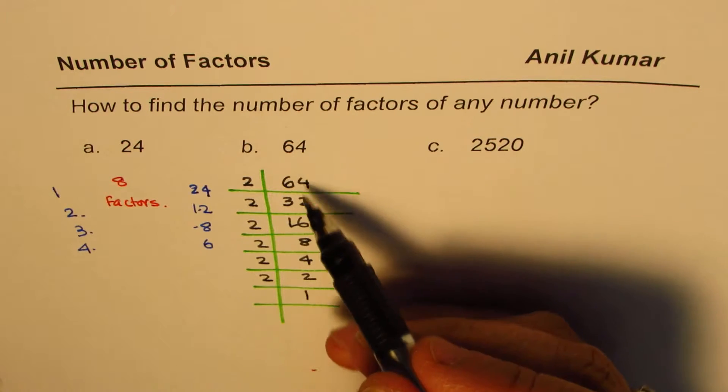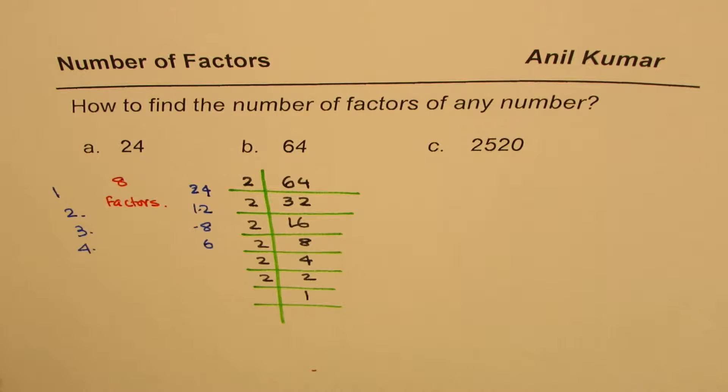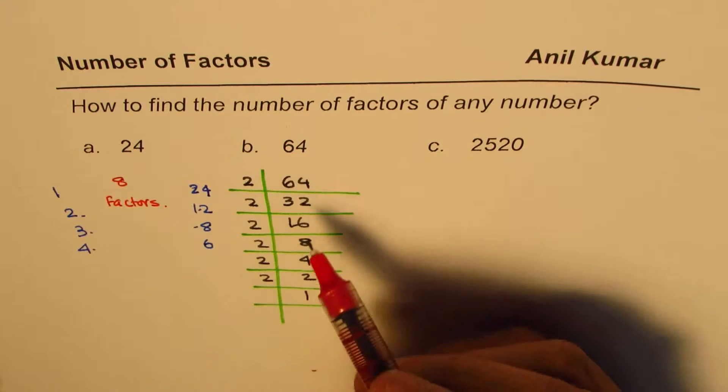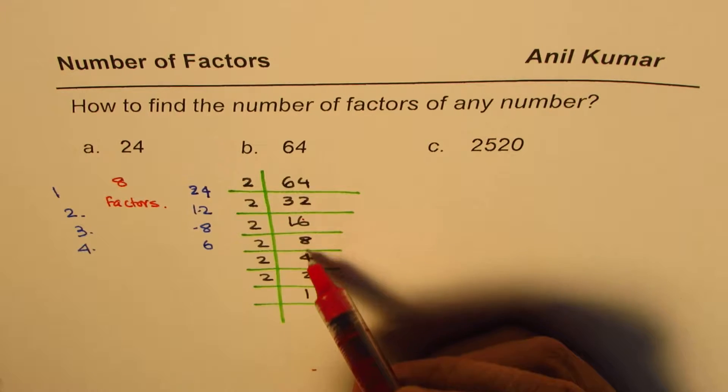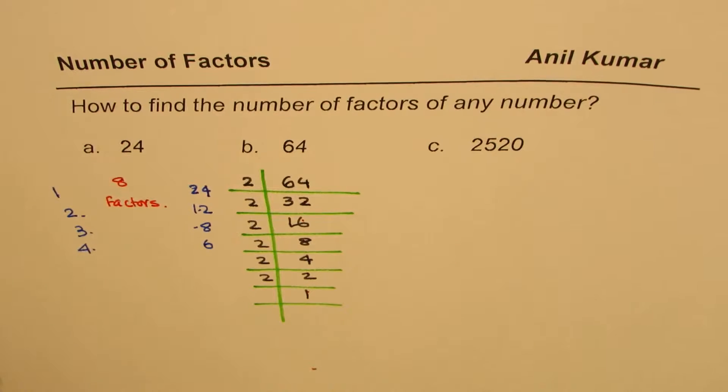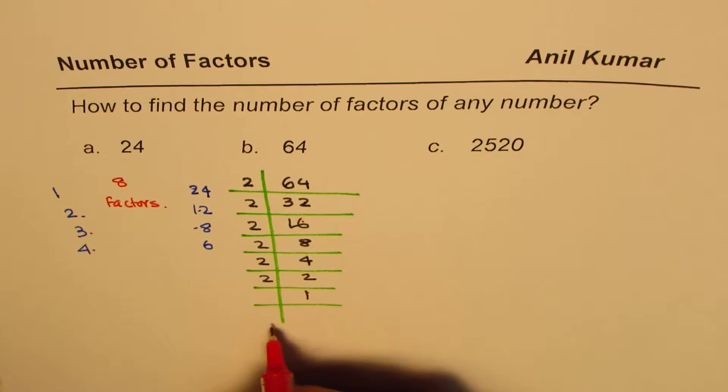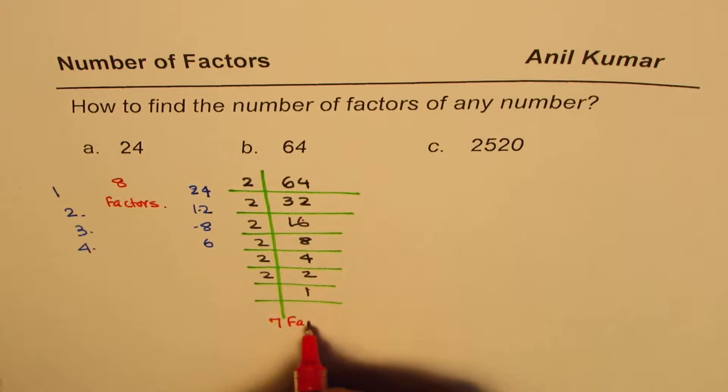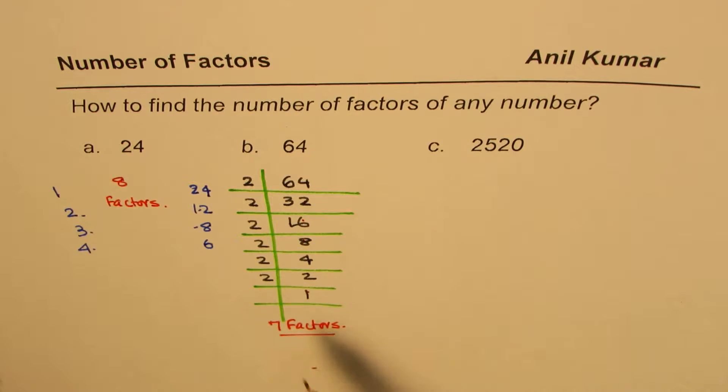So you can see we have all the factors listed in this fashion. It gives me 1, 2, 3, 4, 5, 6, 7 factors. So we have 7 factors. Do you see that? 7 factors. So we found total number of factors for 64 are 7.